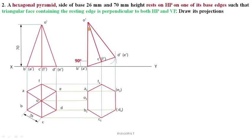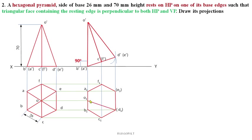Being inclined at 90 degrees — perpendicular to both HP and VP — when viewed from the top, all slant edges connecting the apex O are visible. Join all corners through the apex: D1-O1, E1-O1, F1-O1, and C1-O1. All slant edges are visible in the top view because the pyramid is exactly perpendicular to both HP and VP.